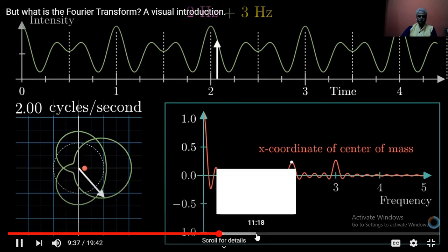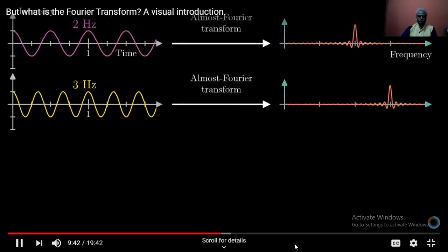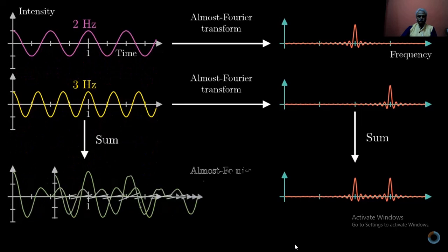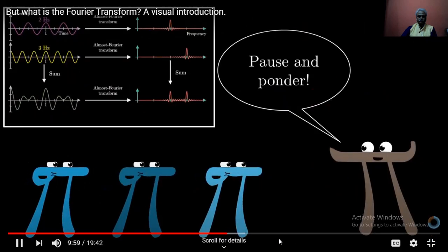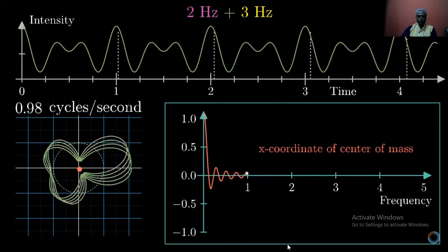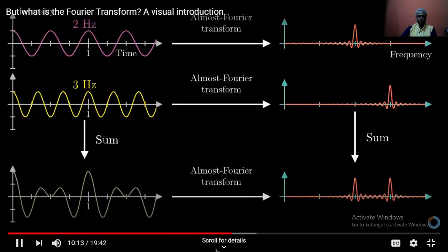Now what's going on here with the two different spikes is that if you were to take two signals and then apply this almost Fourier Transform to each of them individually and then add up the results, what you get is the same as if you first added up the signals and then applied this almost Fourier Transform. This property makes things really useful to us because the transform of a pure frequency is close to zero everywhere except for a spike around that frequency.